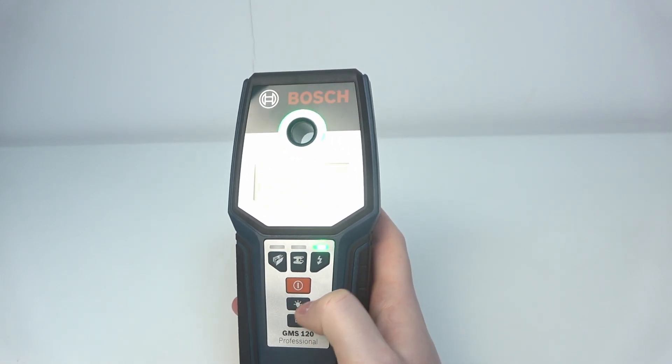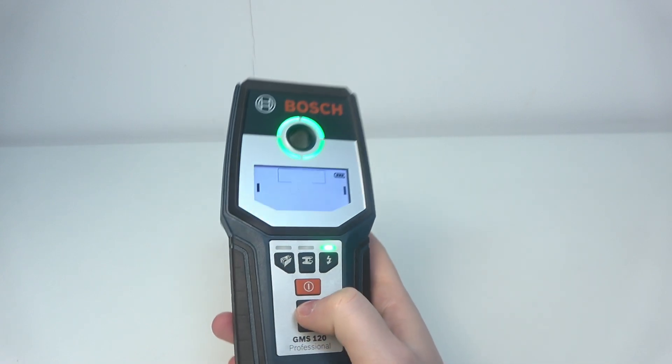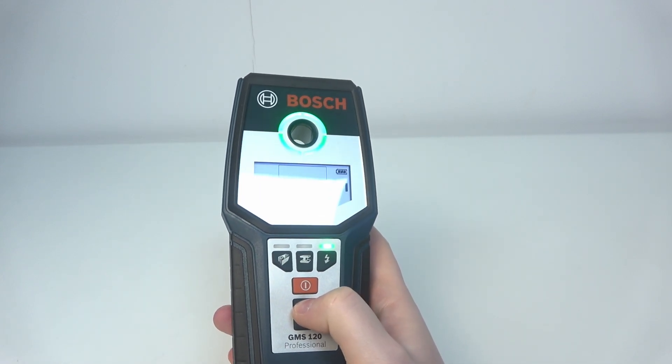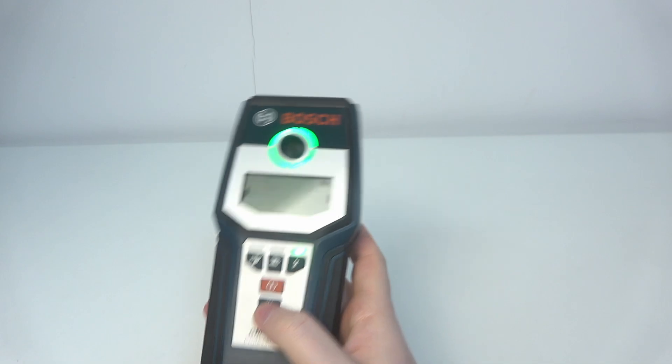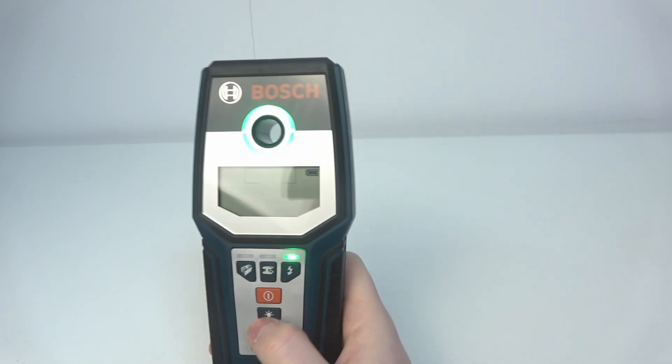And then there's the light button. It will increase the brightness on the display so if you're in a dark room you'll be able to see all of the things in the HUD.